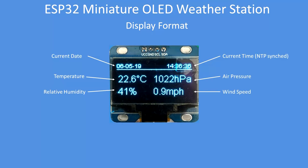That's the display format: current date, which it gets from the environment variable setup, and you can select either metric, imperial (US format), or a mixed mode. The date also takes care of daylight saving, along with current temperature from the BME280, air pressure, relative humidity, and wind speed.